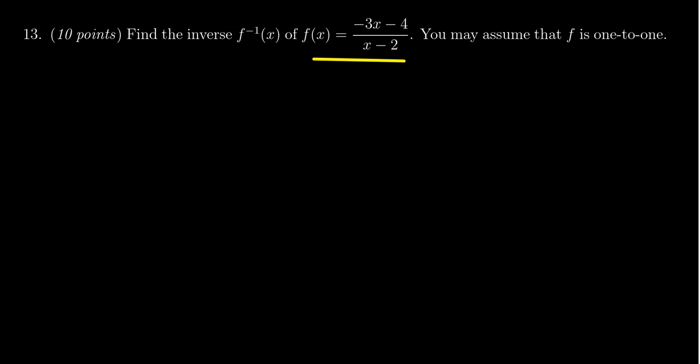We are given the one-to-one function f of x equals negative 3x minus 4 all over x minus 2. You don't have to prove it's one-to-one, you can assume it. We want to compute the algebraic formula for the inverse function of f.